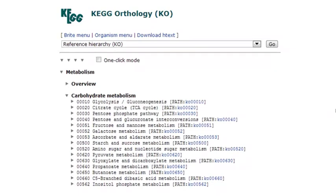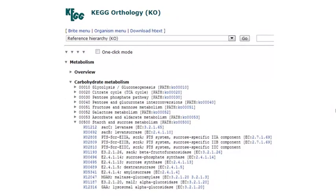If you click on carbohydrate metabolism, you will see a list of different types of carbohydrate metabolism. If you click on starch and sucrose metabolism, you will see the bottom level of KO, which is a list of gene products who have fundamental functional roles in starch and sucrose metabolism.